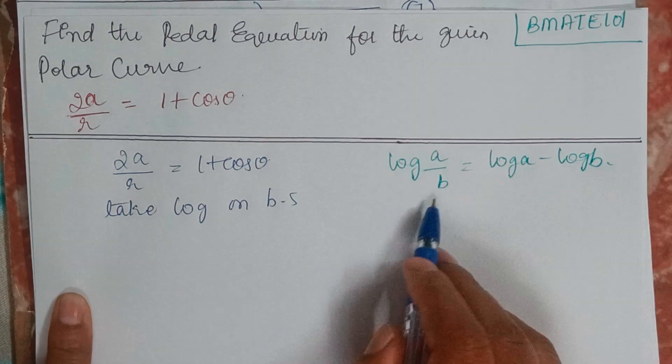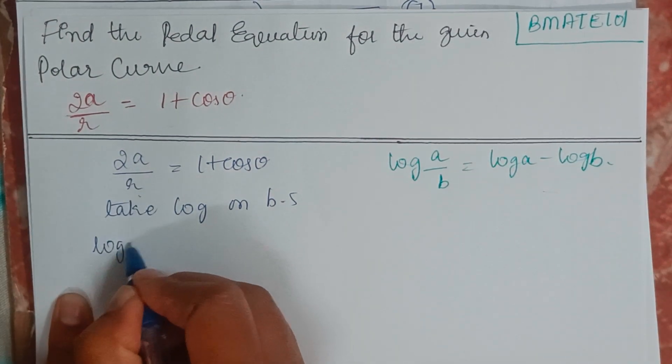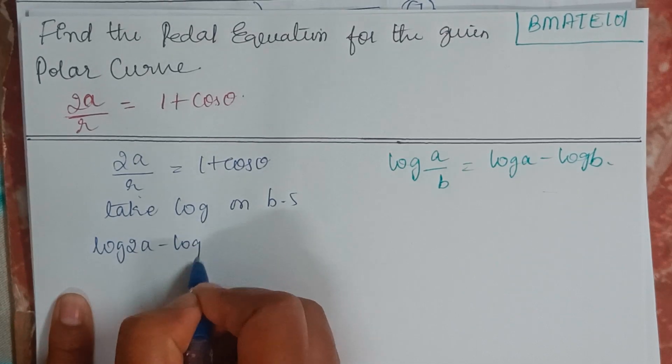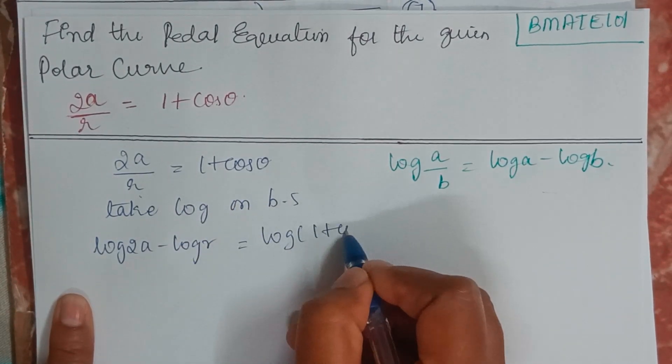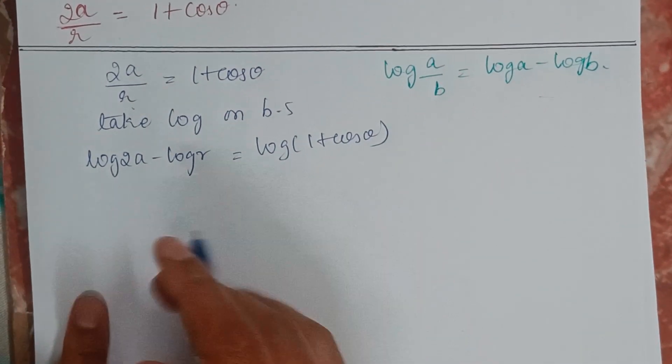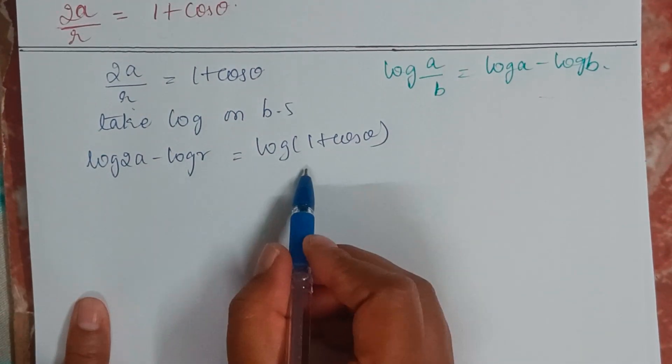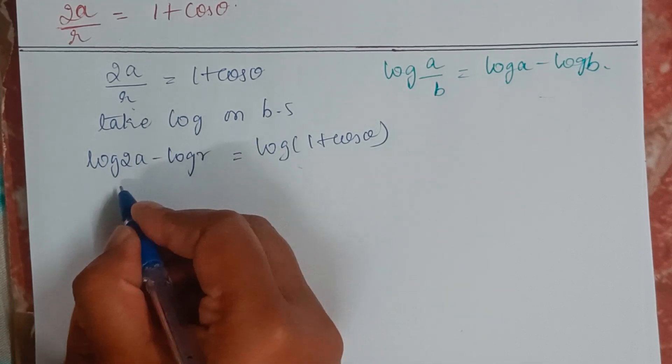So we will use this formula here. This is in the form of A by B. So log 2A minus log R equals log of 1 plus cos theta. Now, the expansion is done using log on both sides.